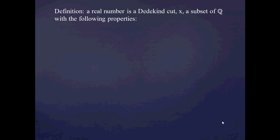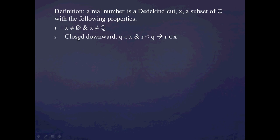Now that we've understood that informally, here's the precise definition of what a real number is according to the idea of Dedekind cuts. We say that a real number is a Dedekind cut X, which is a special subset of the rational numbers with the following three properties. First, the Dedekind cut has to have something in it — it can't equal the empty set — and it can't have everything, meaning it can't contain all the rational numbers.